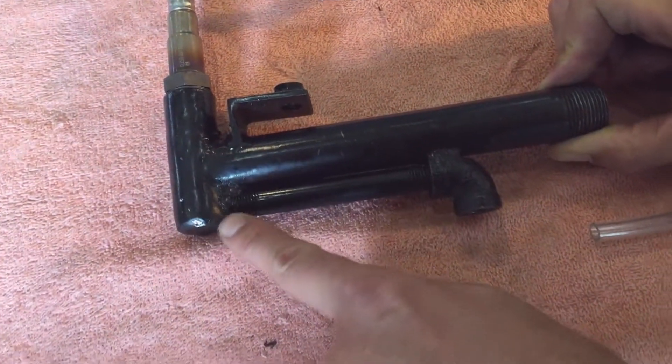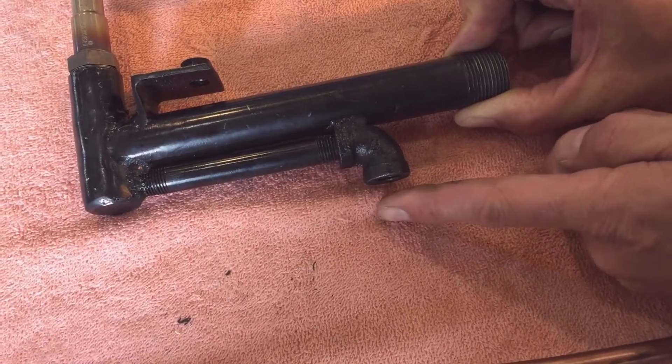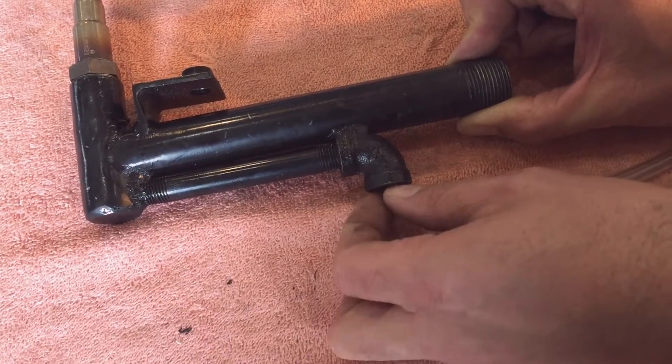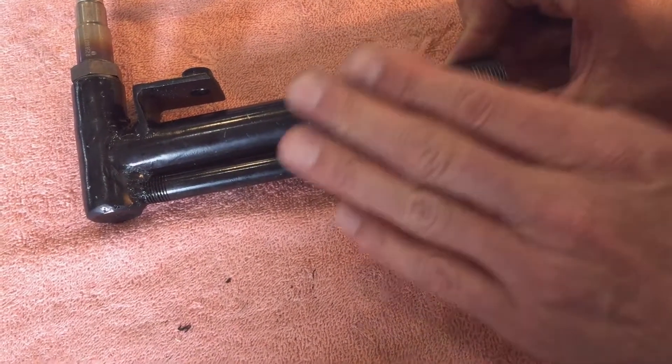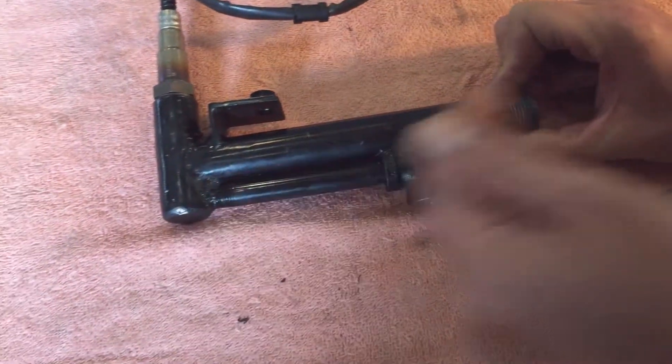As the exhaust flows past here, the Venturi effect causes a vacuum which sucks exhaust gas through. This works good for cars where you've got multiple cylinders constantly pushing exhaust gas past this.